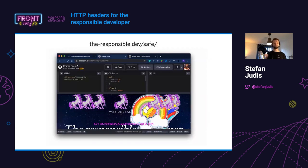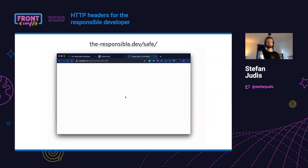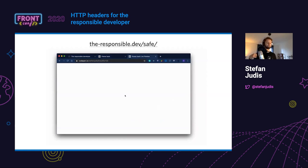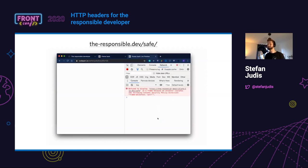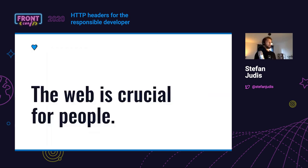When you go to responsible.dev/safe, you'll find out that the unicorns are gone because the malicious third-party script was prevented from loading with CSP. And you'll also see that when you try to frame this site using CodePen or any other service, the CSP directives disallowed this from happening — which made this site a little bit safer. I think this is important because the web is crucial for people.